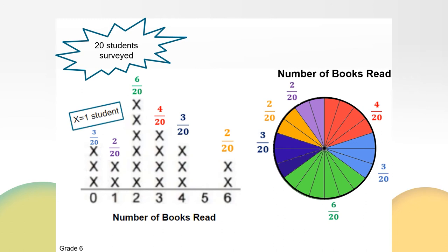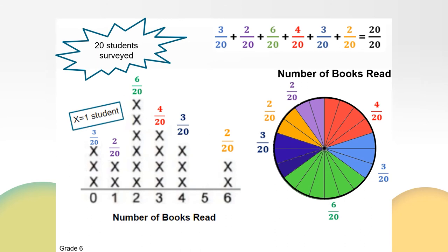Let's find the percent for each category, which in this case is the number of books read. We know the fraction that represents each category. Now let's take some time to find the equivalent decimal and percent. In previous lessons, we have used our knowledge of equivalent fractions and a calculator to find the equivalent decimal. You could use either strategy. Before we start, take a moment to copy down the chart so you can keep track of your thinking.